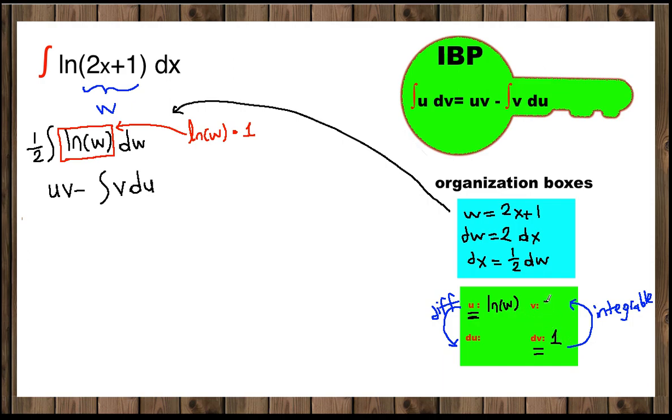So here ln(w) is our u because it's easy to differentiate, and 1 will be our dv because it's easy to find the antiderivative. So what is the antiderivative of 1 with respect to w? It is w. The derivative of the variable is 1; antiderivative of 1 is the variable. And derivative of ln(w) is 1/w dw.